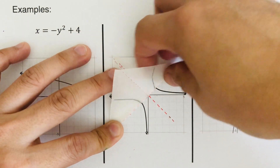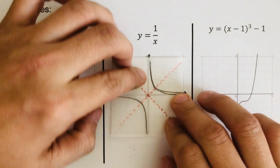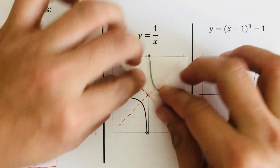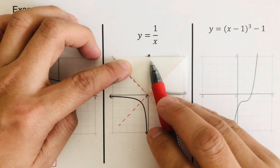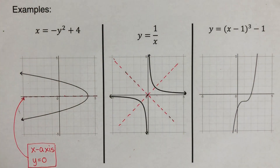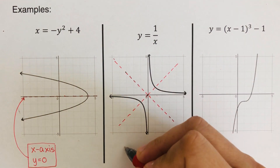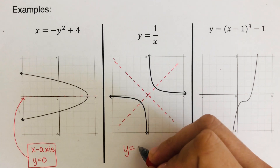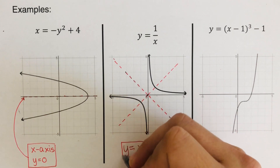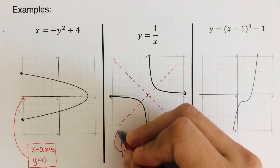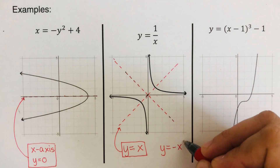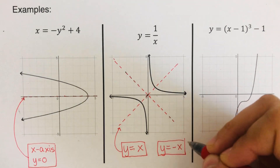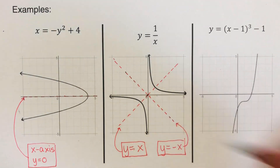If we use the other line of symmetry, they are also going to match up — this branch right here will match up with the other branch. So there are two lines of symmetry for this. The first line of symmetry is y equals positive x, and the other one is y equals negative x.